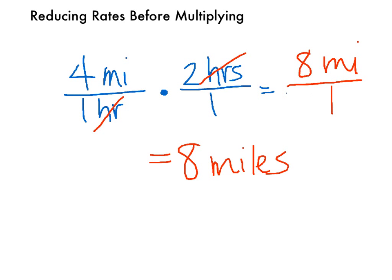In this case, we canceled units because we're multiplying a rate by another measurement. So our rate in this problem is 4 miles per hour and we're multiplying that times 2 hours. So we cancel units to simplify the multiplication problem.